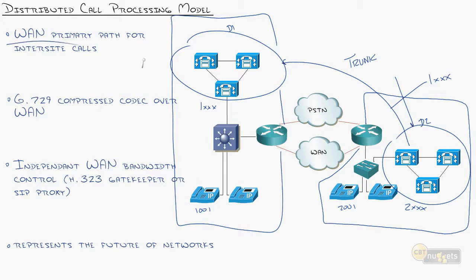Our goal is to use the WAN as our primary communication path. Why? No long distance, cost effective. We can use compression again over that WAN link, whereas the PSTN usually doesn't support compression. It's always going to be G.711. You will want some kind of independent WAN bandwidth control. Once you split into multiple clusters, essentially there's no one able to watch this link.